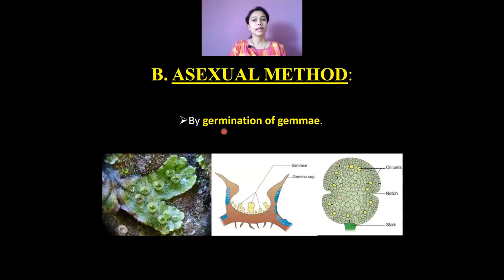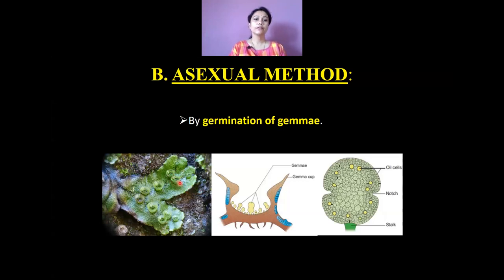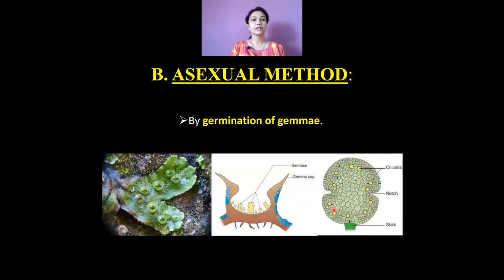Asexual reproduction takes place by the germination of gemmae within gemma cups. As already discussed, these are the means of asexual reproduction. If we cut a section through a gemma cup, we can see the photosynthetic filaments, scales, rhizoids, and within the gemma cup, structures known as gemmae are present. An enlarged view of a gemma shows that it is composed of a stalk with which it is attached to the gemma cup, and it encloses some oil cells.